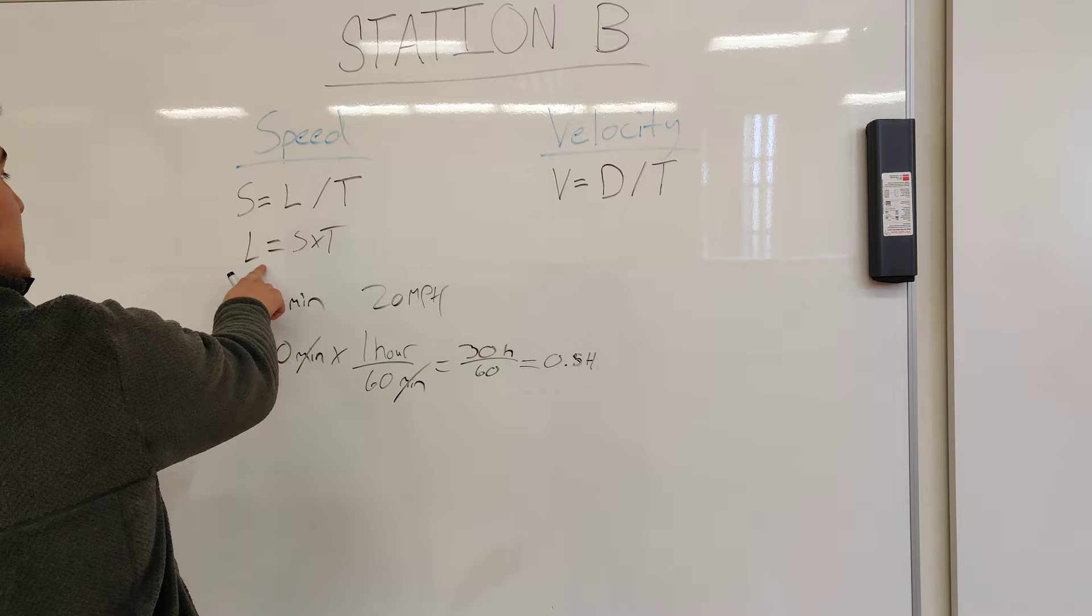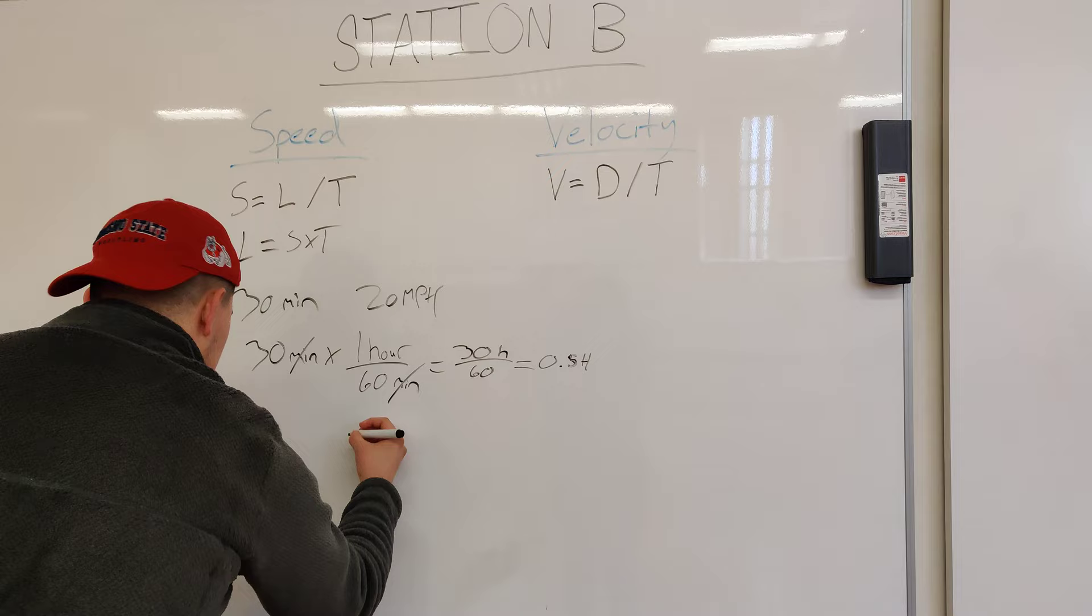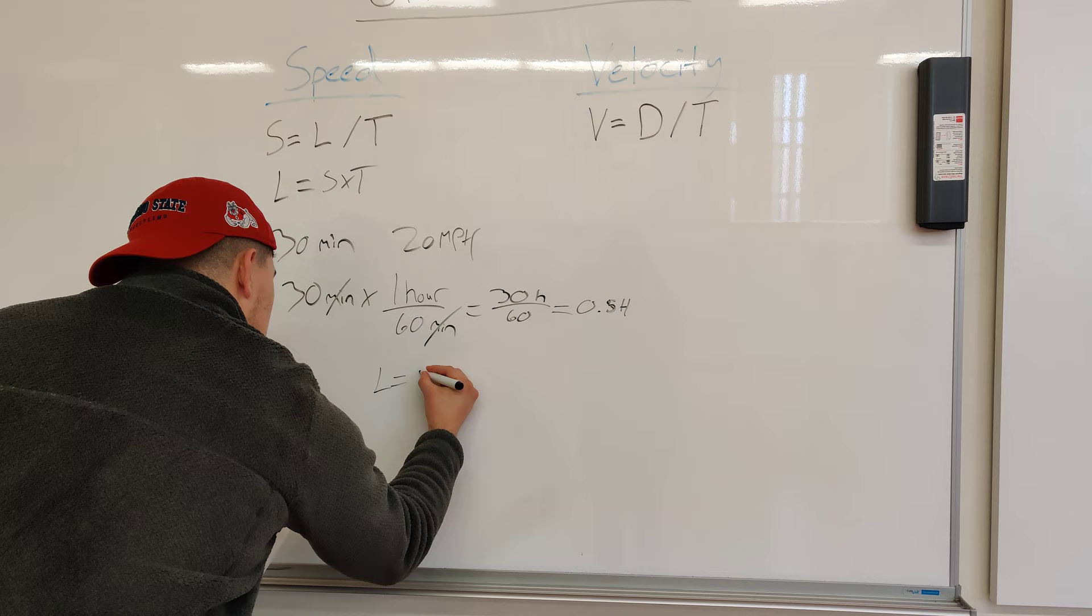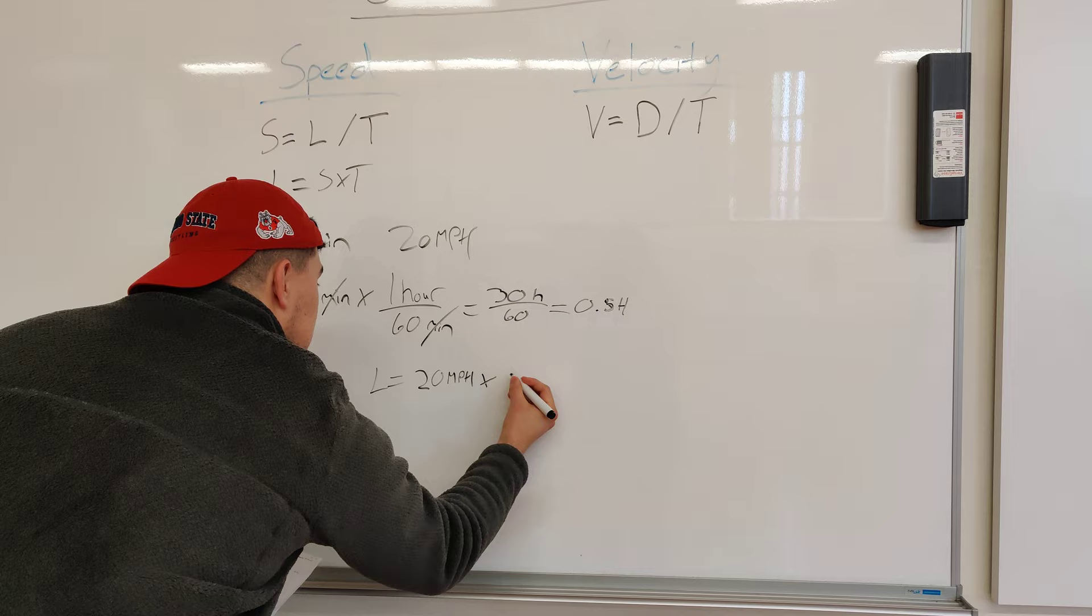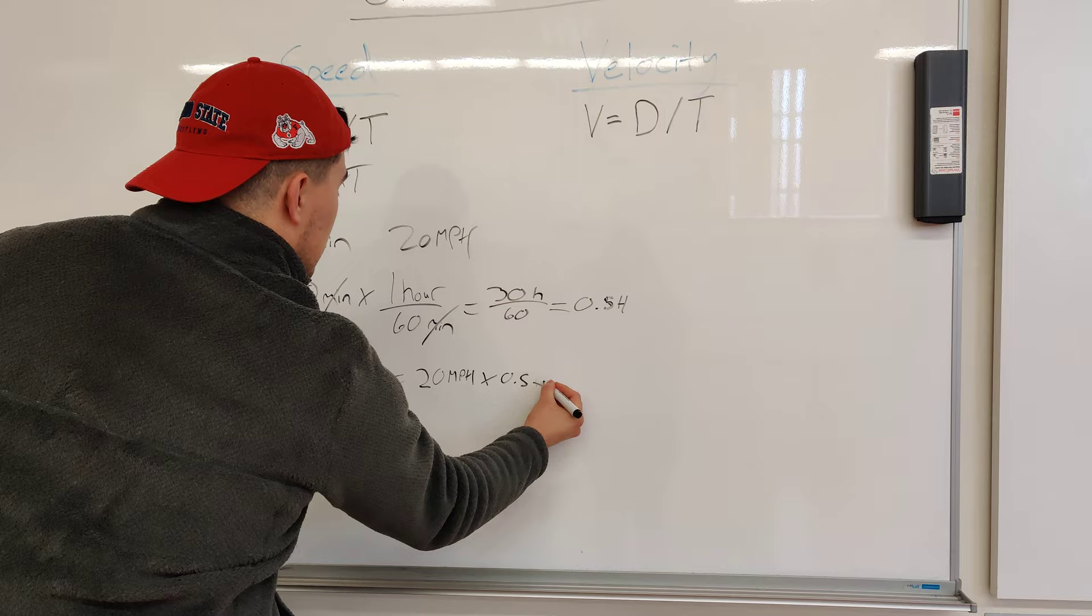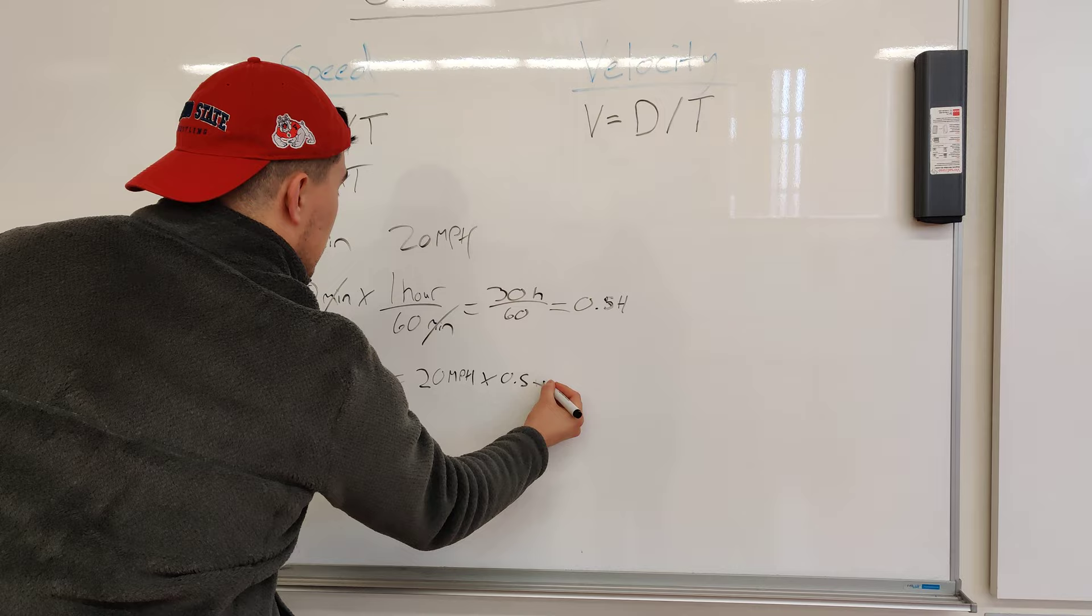Now we have our hours. We're going to put that in our equation. Since we already have our speed and time, now we have to figure out the length. So we have L equals 20 miles per hour times 0.5. Then you just figure out the equation, use your calculator, and get your distance from there.